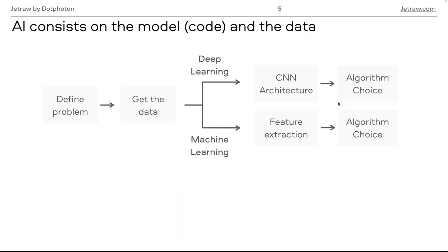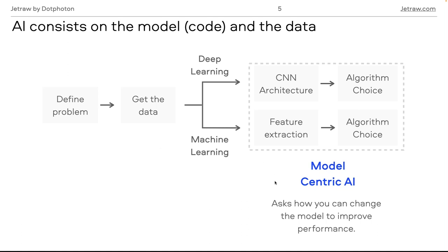The typical AI workflow starts by defining your problem — classification, regression, or segmentation. Depending on the problem, you acquire different types of data. You can then choose a machine learning algorithm, which usually requires the user to extract features from the data such as image intensity, or you can go towards deep learning, where you choose a network architecture and then select the algorithm. Throughout this workflow, you can improve output performance by changing the model — modifying the algorithm, network, or number of layers — or by targeting the data itself.